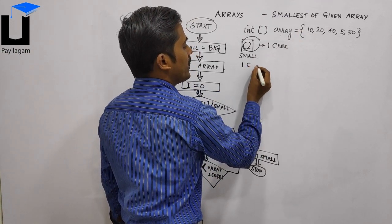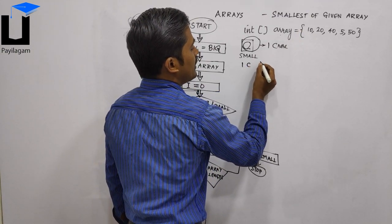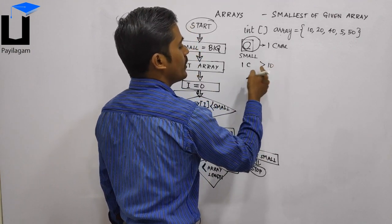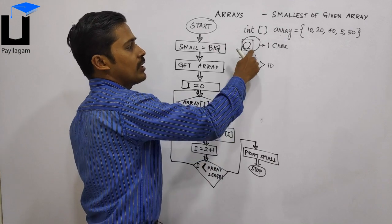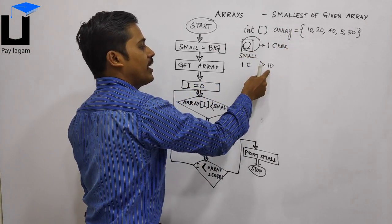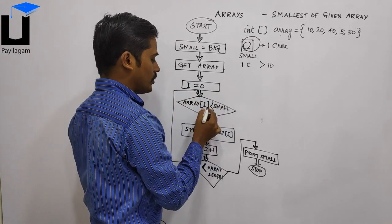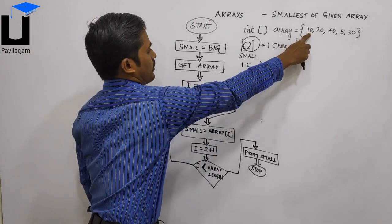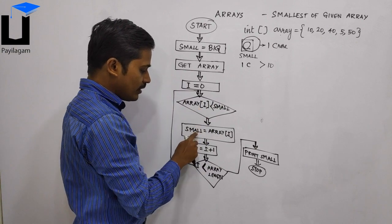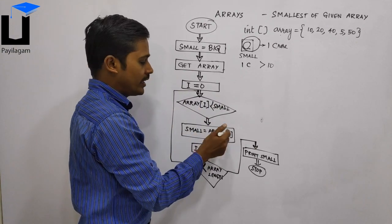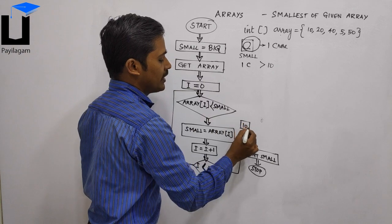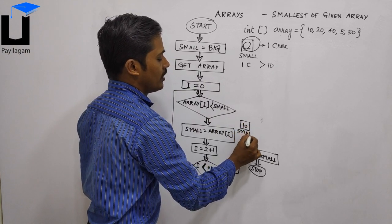You compare array[0] which is 10 to the current small value. It is small, so we put array[0] — which is 10 — into the small box. Array[0] is small, so you store it.